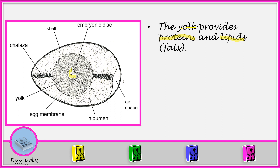We have the middle part. The middle part is what we call the embryonic disc. Then we have this one here surrounding the embryonic disc — that one is the yolk. We have a layer surrounding the yolk; that layer surrounding the yolk, we call it the egg membrane. Then we have this coiled tube. This coiled tube, we call it the chalaza.